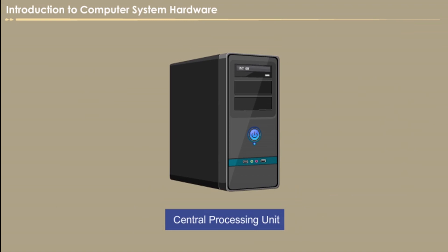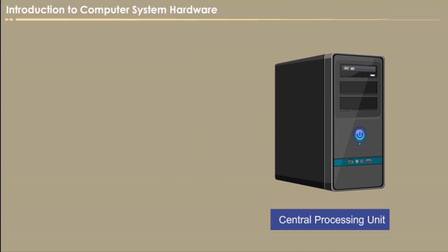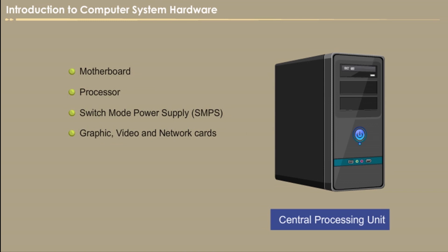The CPU controls, coordinates and supervises the operation of a computer. It is responsible for processing the input data. The processor or CPU is also called the brain of the computer. The parts of the central processing unit are: motherboard, processor, switch mode power supply (SMPS), graphic, video and network cards, hard drive, optical drive or CD/DVD drive, and RAM.